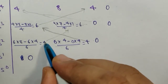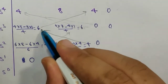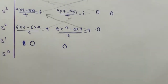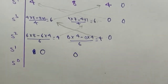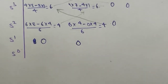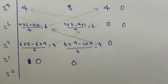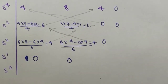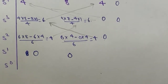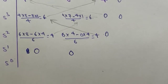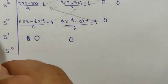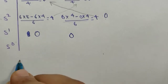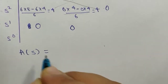As all the elements in the s^1 row are zero, the system is unstable. To find the number of roots lying in the right half of the s-plane, we form an auxiliary equation A(s) using the coefficients of the s^2 row — the row above the row of zeros.